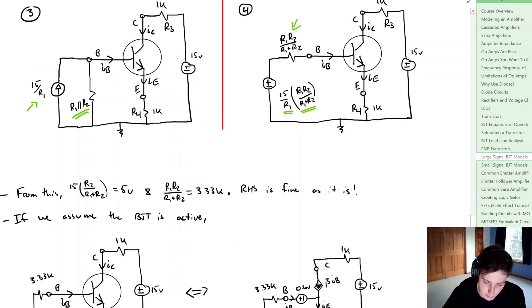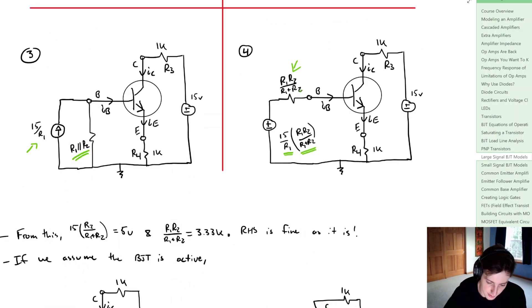This looks pretty familiar. What we can do from this is simply say that from the values known above, the amplitude of that voltage source is equal to 5 volts, the equivalent resistance is going to be equal to 3.33 kilohms, and we didn't really need to do anything with the right hand side. It's pretty fine as it is.